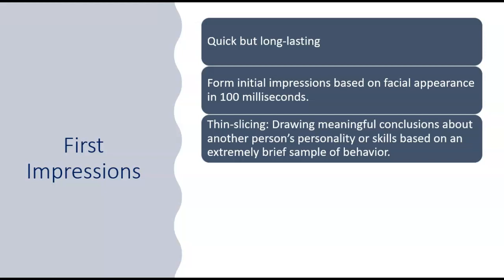Over the next couple of days, try and pay attention to when you do this thin slicing with others. Think especially about when you run into someone new, someone you don't know at all. How quickly do you decide that they are approachable? How quickly do you decide they are weird? How quickly do you decide they're friendly? All of those are things that, from an evolutionary standpoint, it's helpful that we do them. They are quite prone to error — there's definitely a useful purpose for doing it, but they can lead us down a mistaken path.